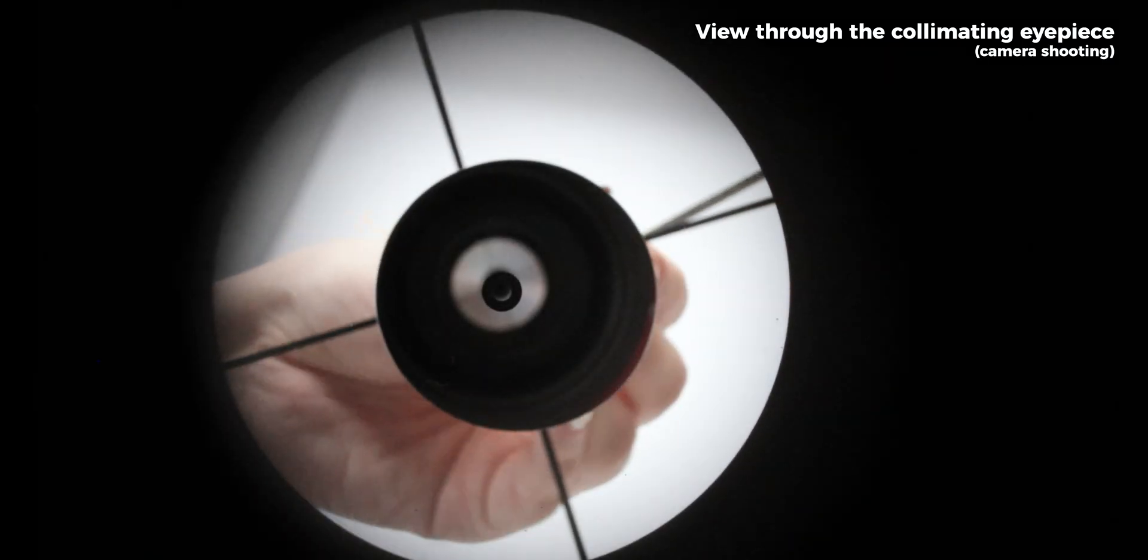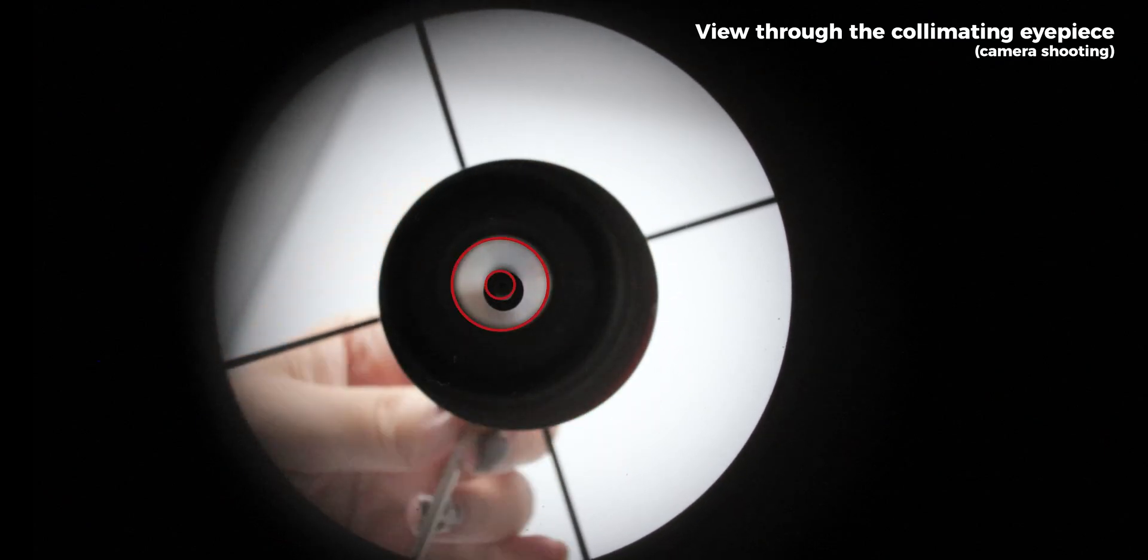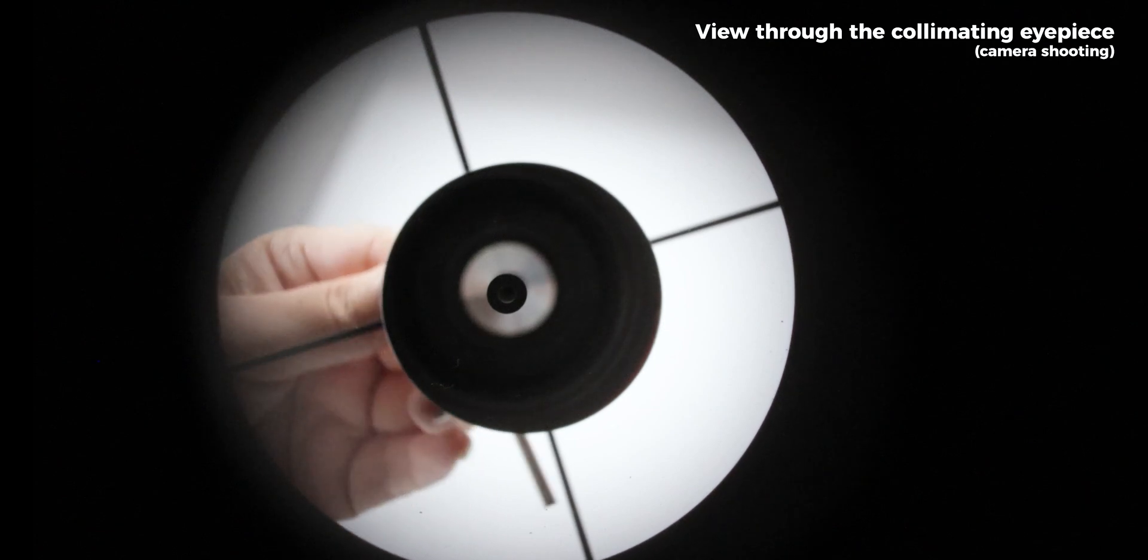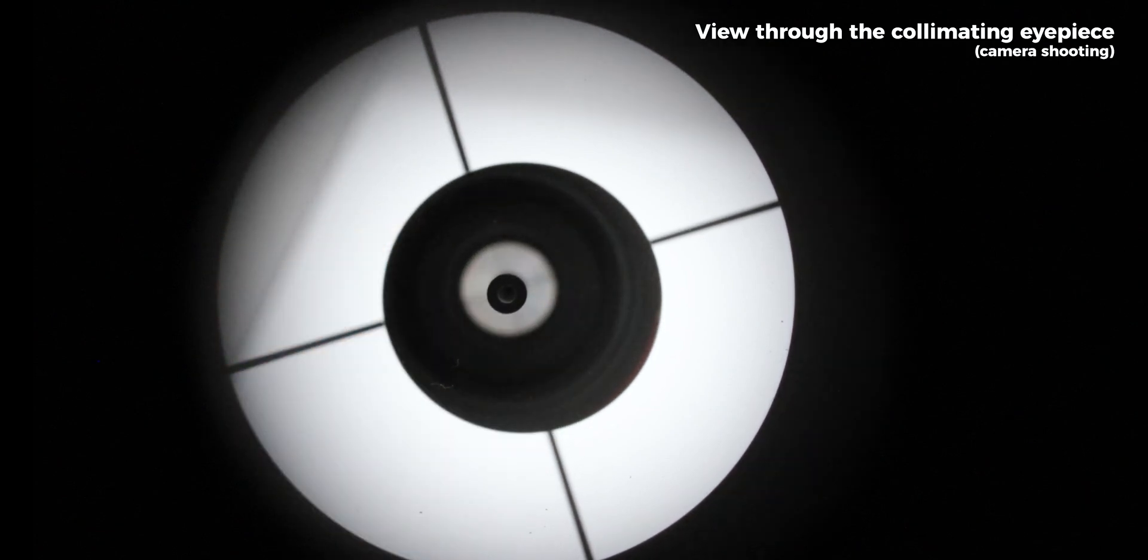Looking through the collimating eyepiece, adjust the secondary mirror adjustment screw. Let the actual situation be the same as the one shown in the illustration, the red circle is concentric with the center point.